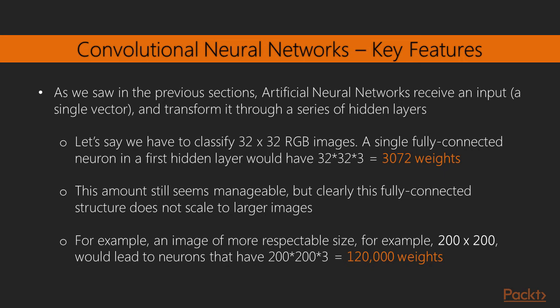This amount still seems manageable but clearly this fully connected structure does not scale to larger images. For example, an image of more respectable size, for example 200 by 200, would lead to neurons that have 200 times 200 times 3, that is 120,000 weights. Moreover we would almost certainly want to have several of such neurons so the parameters would grow very quickly.